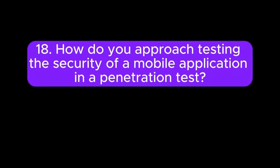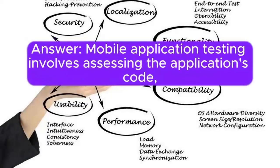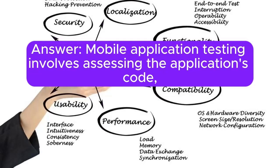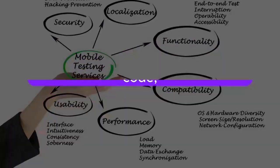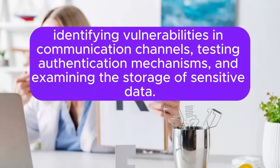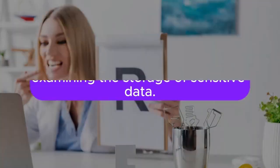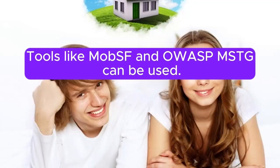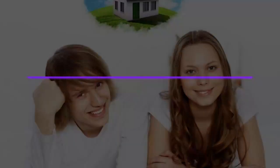Question 18: How do you approach testing the security of a mobile application in a penetration test? Answer: Mobile application testing involves assessing the application's code, identifying vulnerabilities in communication channels, testing authentication mechanisms, and examining the storage of sensitive data. Tools like MobSF and OWASP MSTG can be used.